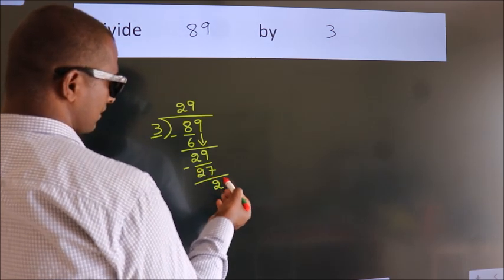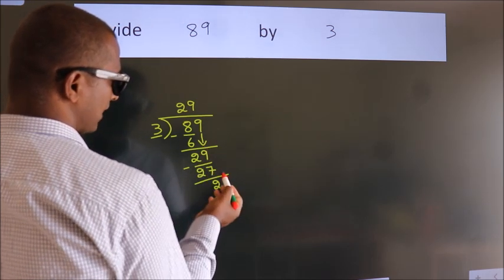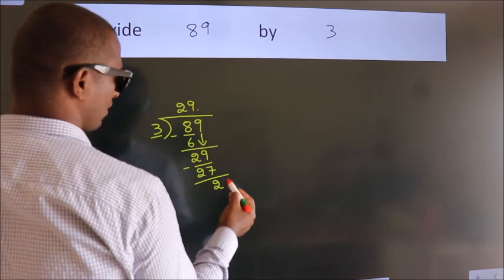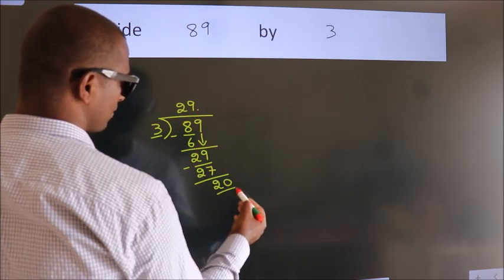After this, no more numbers to bring down. So, what we do is, we put a dot, take 0. So, 20.